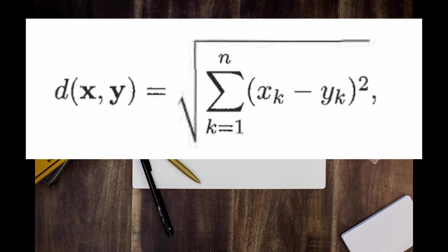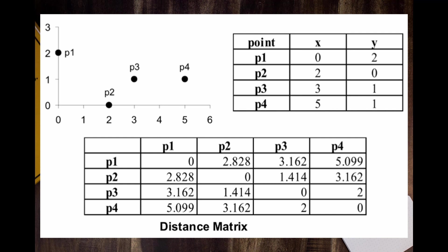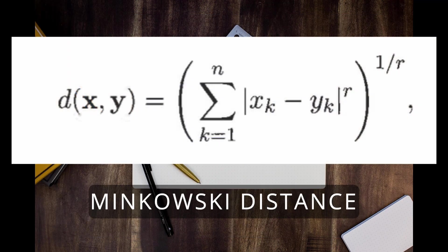Let's look at an example. We have four points on a two-dimensional space — P1, P2, P3, P4 — with their coordinates shown. We can calculate a distance matrix using Euclidean distance. The Euclidean distance between the same point is always zero. Looking at the matrix: P1 and P4 have the highest distance, so they are the most dissimilar. P2 and P3 have the lowest distance in the entire matrix, meaning they are the most similar objects in that two-dimensional space.